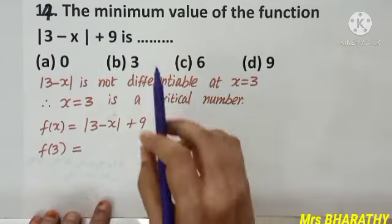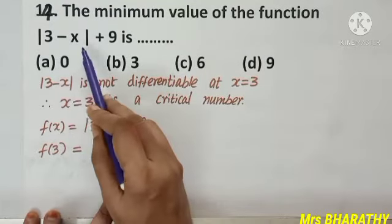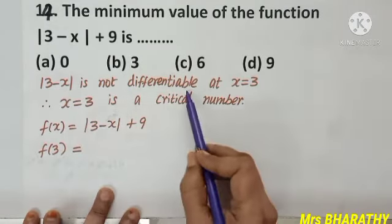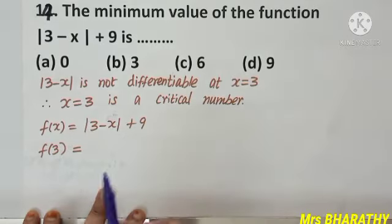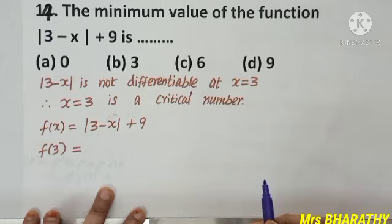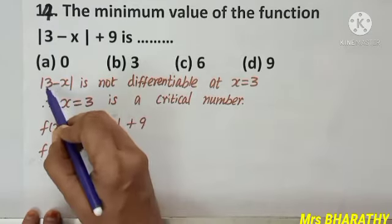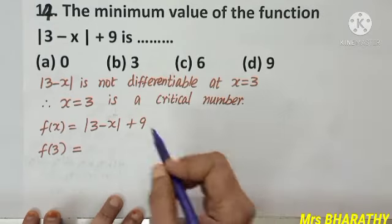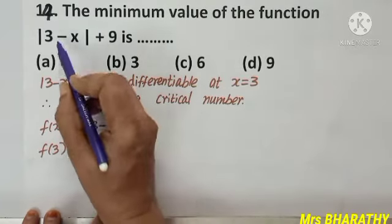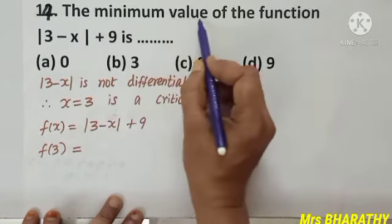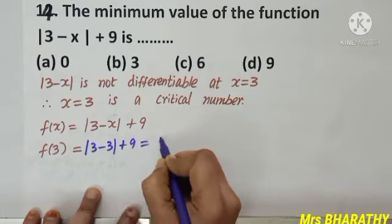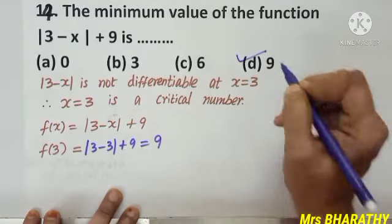Question number 14: the minimum value of the function |3 − x| + 9. We know |3 − x| is not differentiable at x = 3 (general formula: |x − a| is not differentiable at a). So x = 3 is a critical number. Substituting x = 3: |3 − 3| + 9 = 0 + 9 = 9. Option D is the right choice.